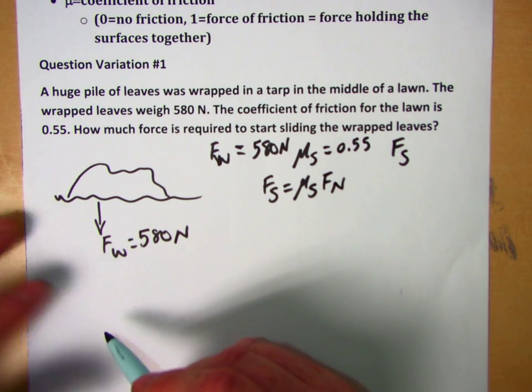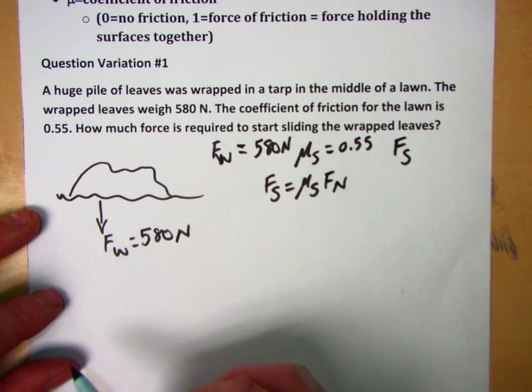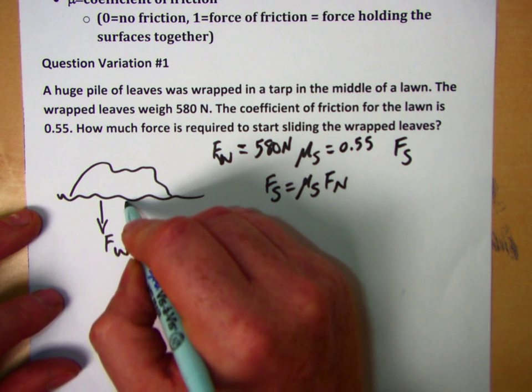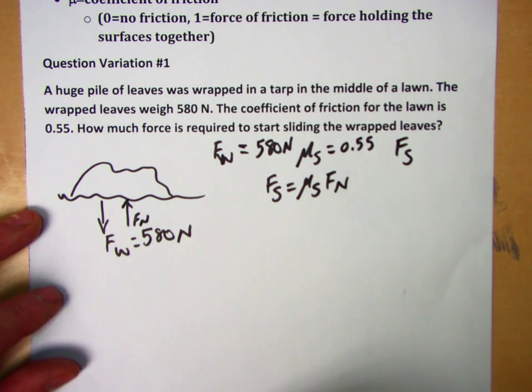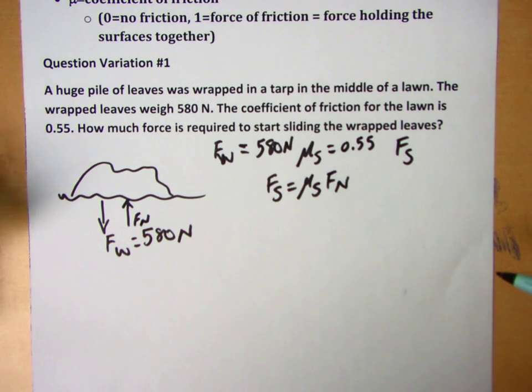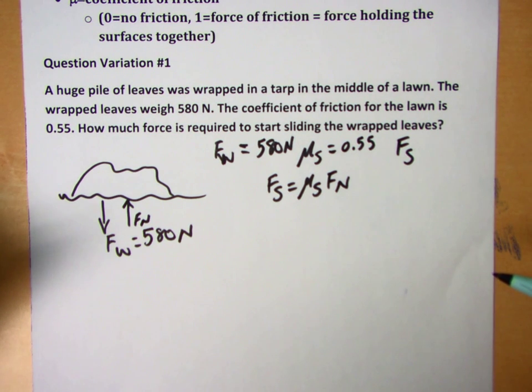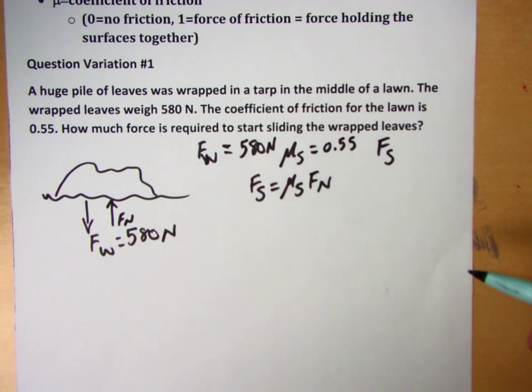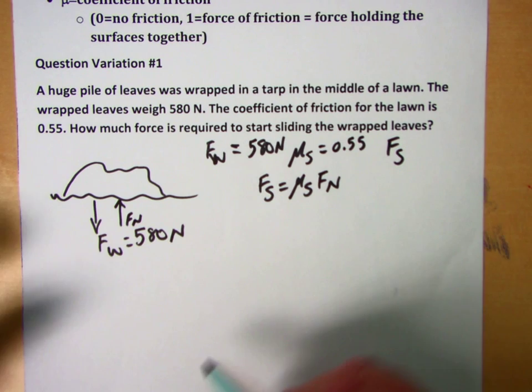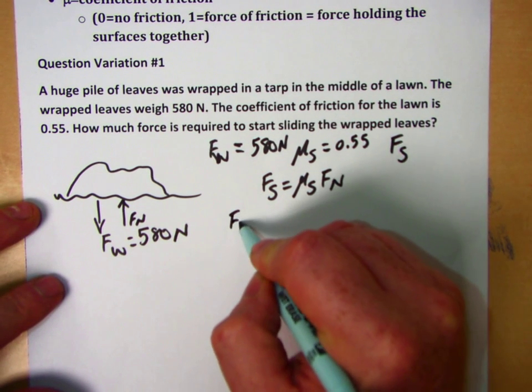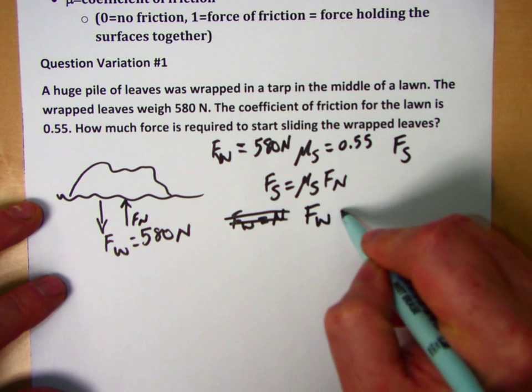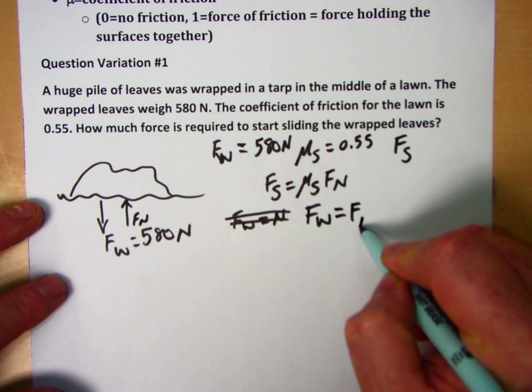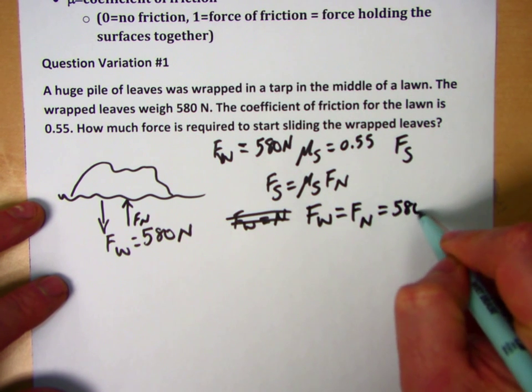Our weight force is the pull of gravity on the mass that makes up the leaves, but we have an equal and opposite force which is our normal force. We have that equal and opposite force because if we didn't, the leaves would just fall into the earth. So your normal force equals your weight force—they're equal and opposite. Fw equals Fn, and they both equal 580 newtons.